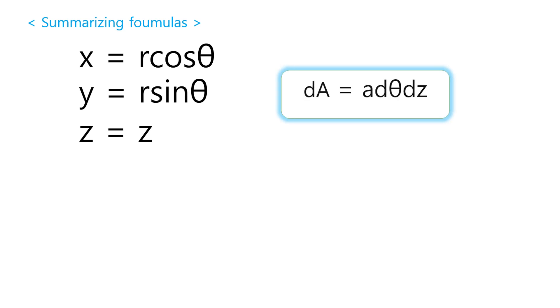Well, let me summarize the formulas until now. x is R cosine theta, y is R sine theta, and z is z. And formula of dA is like this. Plus, formula of dV is like this: R dR d theta dZ. Just multiply these.